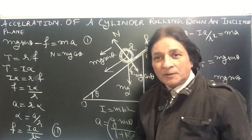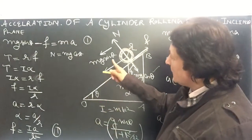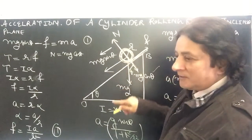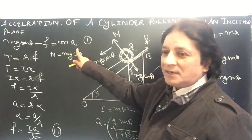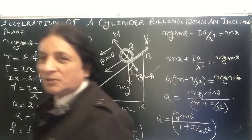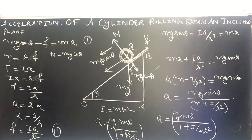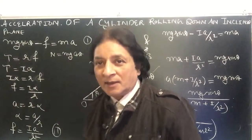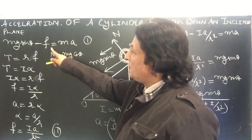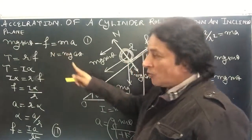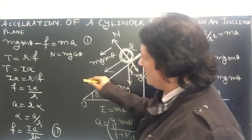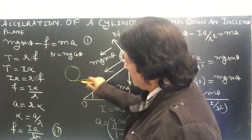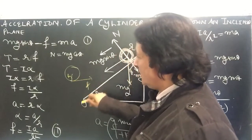Because mg sine theta is unbalanced, mg sine theta minus the force of friction equals ma. The force of friction causes a torque. This is the force of friction and this is the radius r, the perpendicular distance.